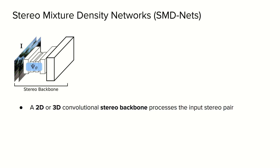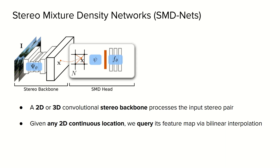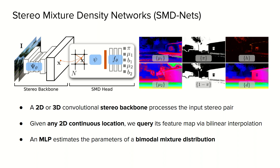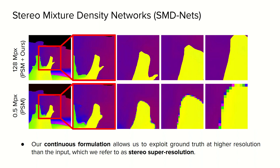Here we show our model that, on top of a standard stereo backbone, does not directly predict the output disparity or the parameters of the bimodal mixture model, but instead, by means of an additional head called the SMD head, queries at arbitrary continuous locations in the image domain. The feature values predicted by the stereo backbone are retrieved using bilinear interpolation, then passed through a multilayer perceptron to estimate the parameters of the bimodal Laplacian mixture distribution. Note that our formulation allows querying the disparity at any continuous 2D pixel location, enabling ultra-high resolution predictions.